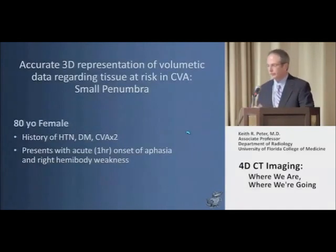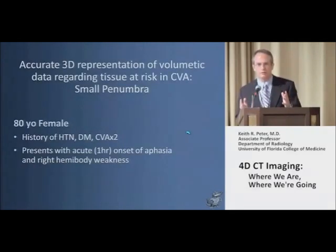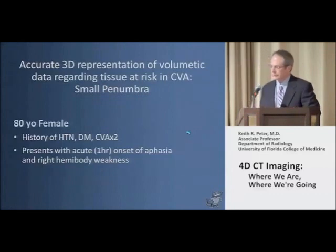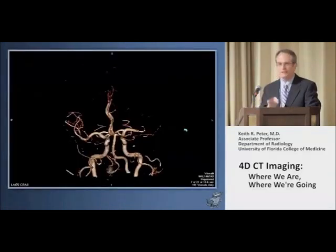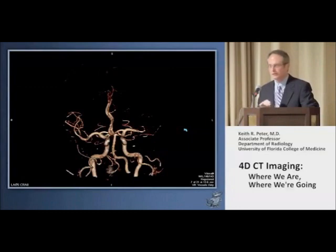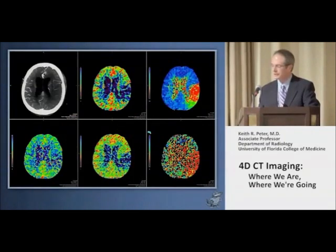This is a patient where we're looking at an overall small penumbra to determine whether to proceed with treatment. An 80-year-old female with a history of hypertension and diabetes, who had had two prior infarcts, presented with acute onset of aphasia and right hemibody weakness. This is the case you've seen a little bit of in the past — an occlusion of the left middle cerebral artery at the M1-M2 junction region.